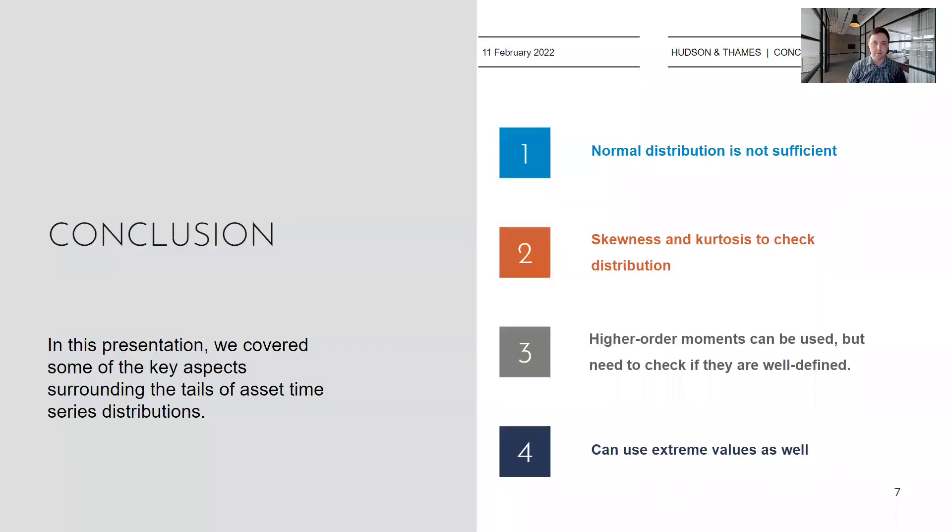In this presentation, we discussed some of the key aspects around asset time series distributions. The first point, which was already pointed out by Mandelbrot in the 1960s, is that the normal distribution is not sufficient. In point two, we discussed the idea of using the skewness and kurtosis to check how far your sample data, in terms of its distribution, deviates from a normal distribution.